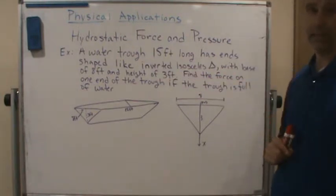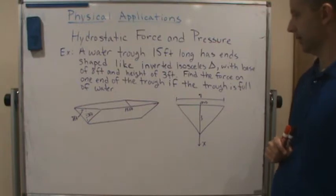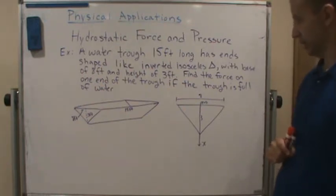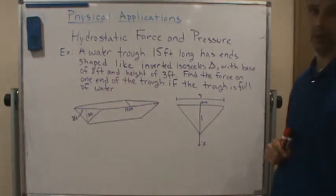like an inverted isosceles triangle, and the base of the triangle is 8 feet and the height is 3 feet. So it says find the force on one end of the trough if the trough is full of water.